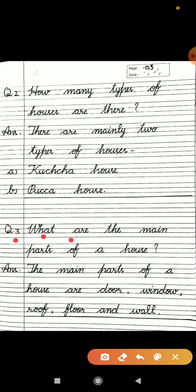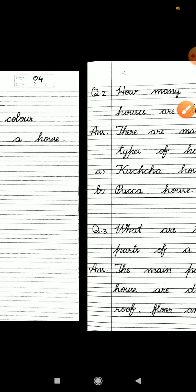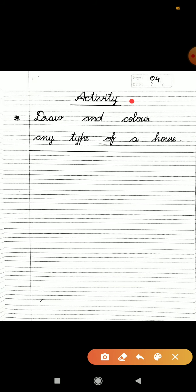After completing question number two, you will draw one line to show its completion. After it, you will start to write question number three. What are the main parts of a house? Question mark. From the next line, you will start the answer. The main parts of a house are door, window, roof, floor, and wall. Full stop.